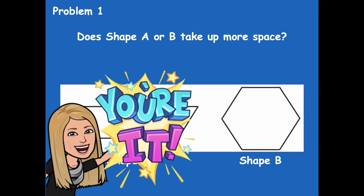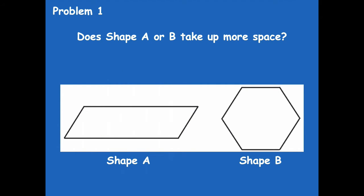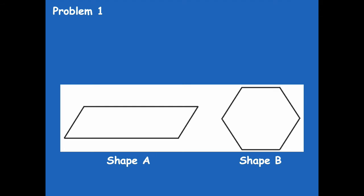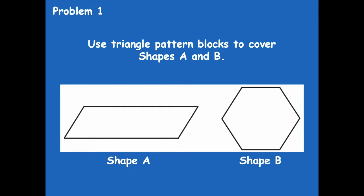Make sure to pause if you need more time. Which one takes up more space? Some of you said A, maybe because it's longer. Some of you said B because there's more on the top and bottom. Let's look. We're going to use triangle pattern blocks to cover shapes A and B. Take out just the triangles, cover those shapes, and see how many triangles each shape takes up.